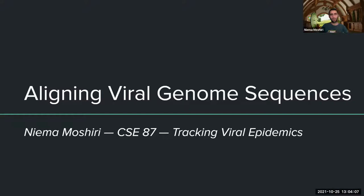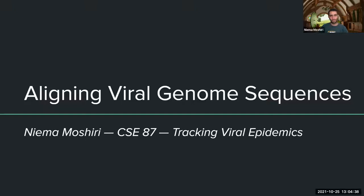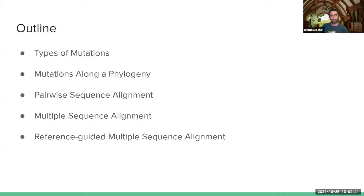Today is our first step towards actually analyzing these genome sequences. Up to this point, all we've been talking about is how to collect them, but we haven't talked about the epidemiology side — how do I actually use this genome information collected from all these different patients to make inferences about the public health crisis. So the first computational task we're going to talk about is sequence alignment.